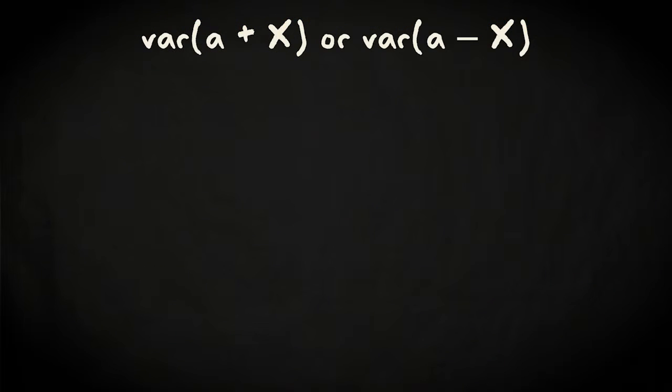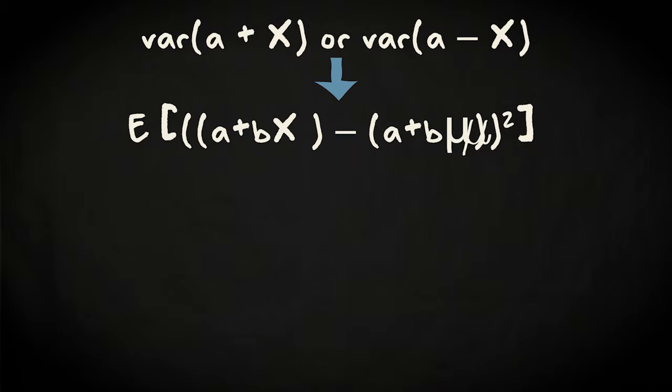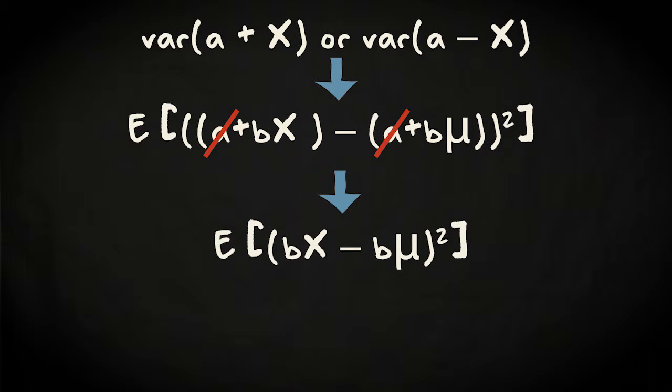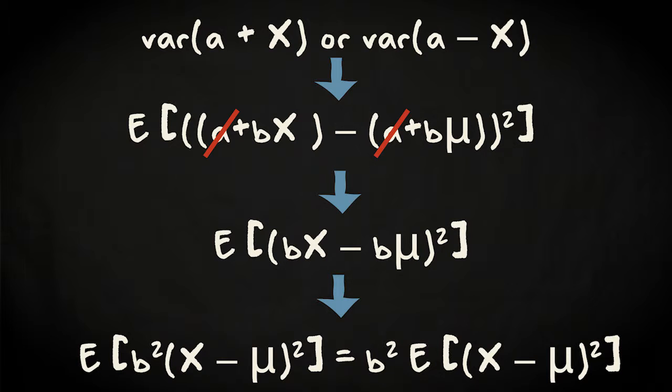Now let's see what happens with the variance of the random variable when that variable would be adjusted by adding a value A and multiplying with the value B. When you enter this transformation in the equation defining the variance, the constant A disappears, but the factor B is being squared.